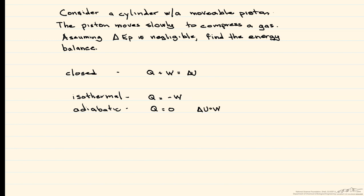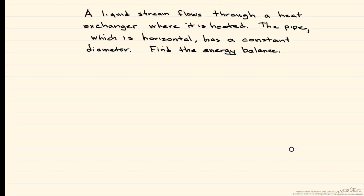Now let's look at an example of an open system. A liquid stream flows through a heat exchanger where it is heated. It has a constant diameter, so there's no change in velocity, and it's horizontal, so there's no change in elevation. Since it's a liquid stream, we assume density stays constant. Therefore, our potential energy and kinetic energy are both equal to zero. In addition, there are no moving parts, no electrical current, and no radiation, so W is also equal to zero. Our energy balance simplifies to Q equals delta H.